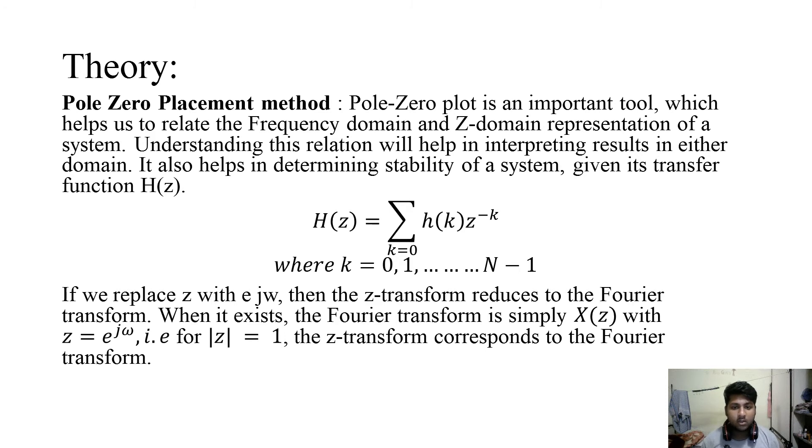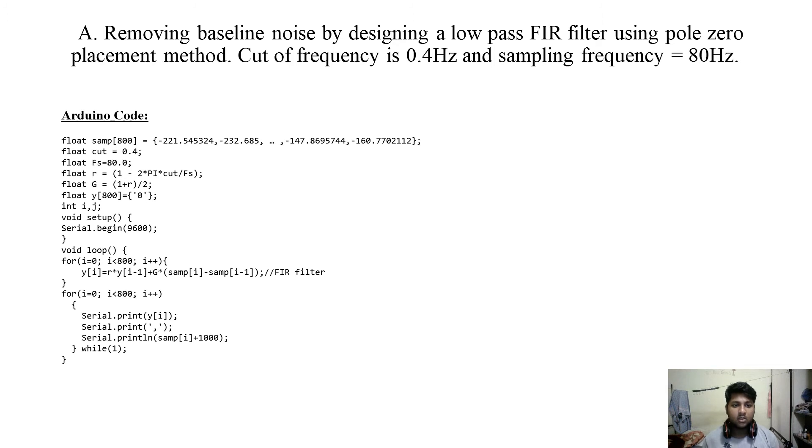In the pole zero method we will add poles and zeroes in the Z plane to create a filter which will filter out the required components. Now first we will look at designing a low pass filter using pole zero placement method.